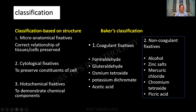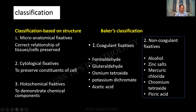Fixatives can be classified based on the structure. Accordingly, there can be micro-anatomical, which shows the exact structure of the slide — the cytology and the histology. Second one will be the cytological fixatives, namely the nucleus and the cytoplasm and how the various constituents are being preserved. Third one is histochemical, preserving the histological and the chemical nature so as to demonstrate the chemical components — for example, what are you going to do when you do a PAS stain?